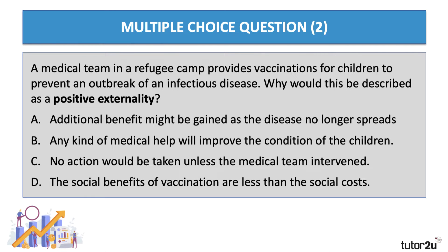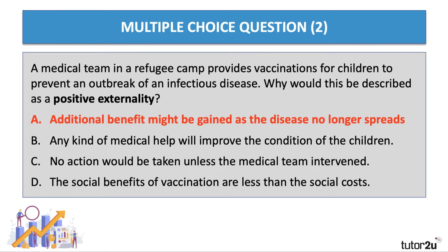A medical team in a refugee camp provide vaccinations for children to prevent an outbreak of an infectious disease. Why would this be described as a positive externality? Have a go at question two. We're looking here for a positive externality — an external benefit for vaccinating children — and the right answer is A: additional external benefit might be gained as the disease no longer spreads. Successful vaccination programmes would bring down the risk of serious illness and disease, and can also prevent infection, as we're seeing with the COVID-19 vaccination programmes around the world. That's the main positive externality.